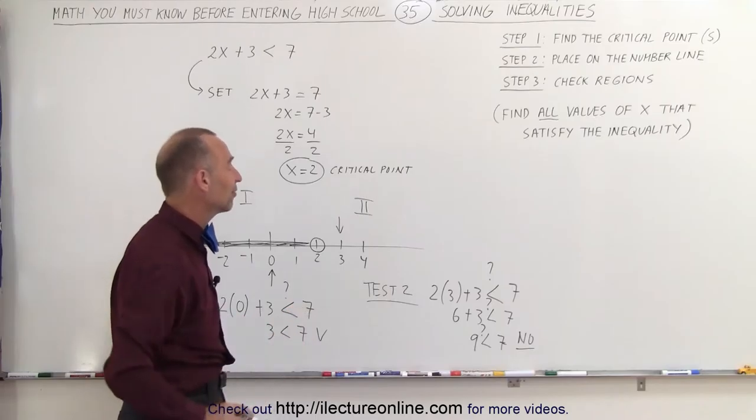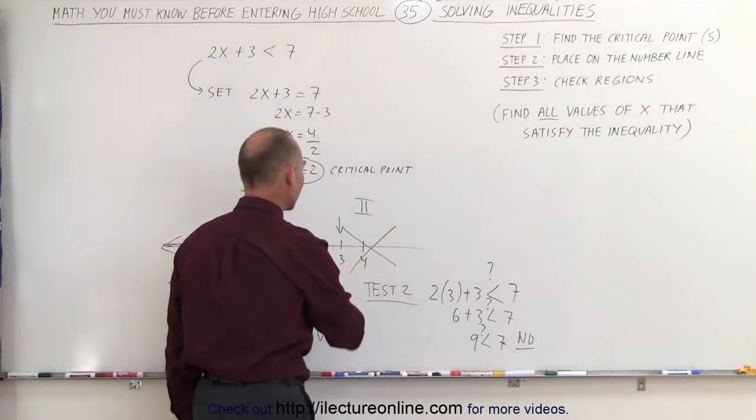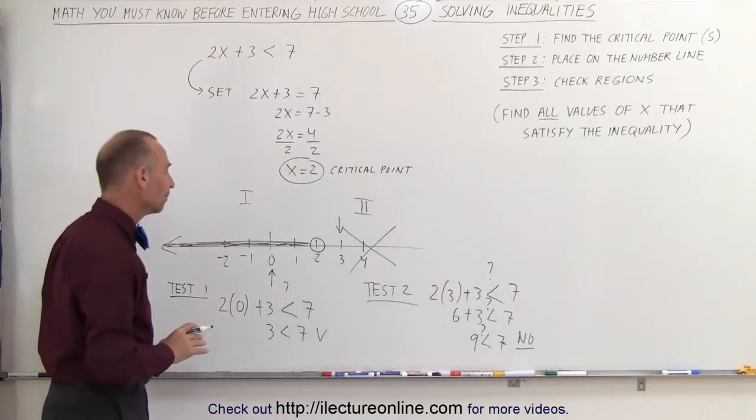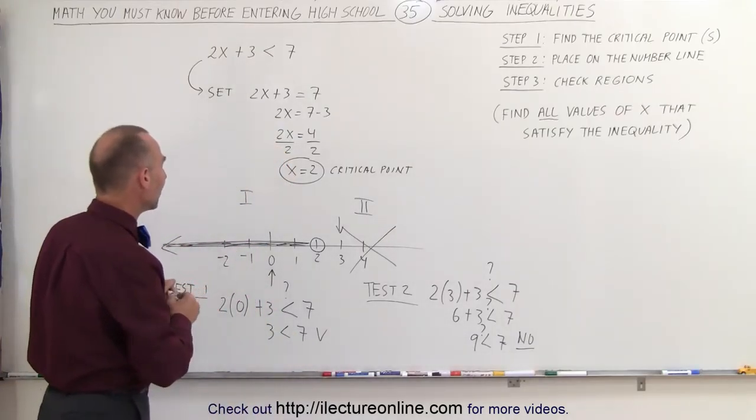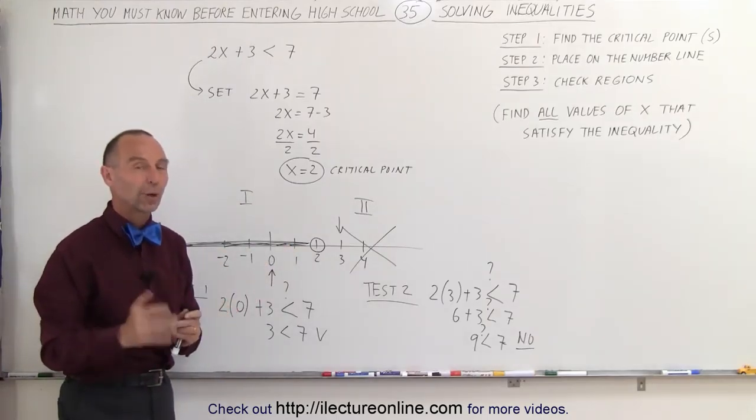So therefore it does not satisfy the inequality, which means the whole region to the right side of the critical point does not satisfy the inequality, which means that all the values that are less than 2 satisfy the inequality, none of the values that are greater than 2.